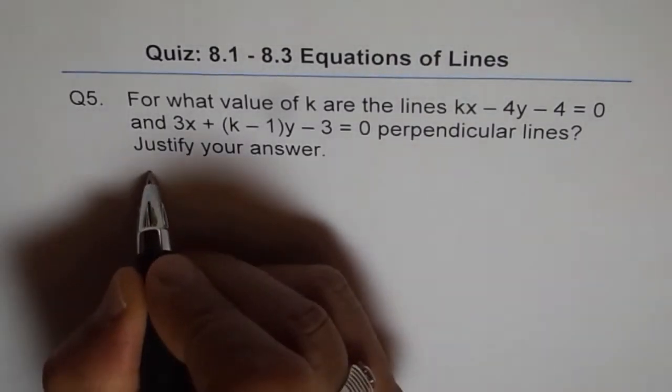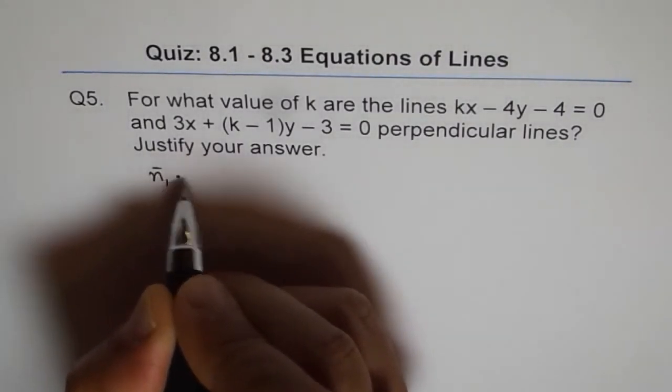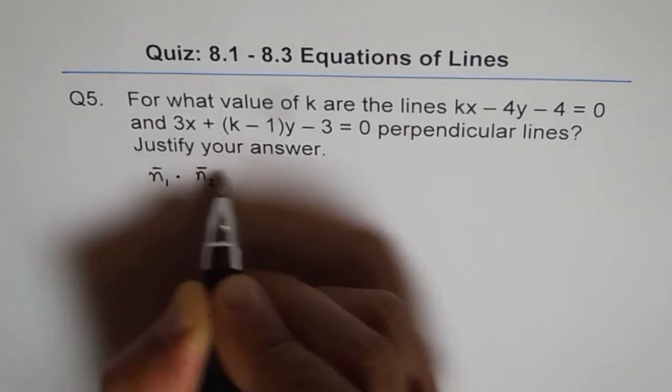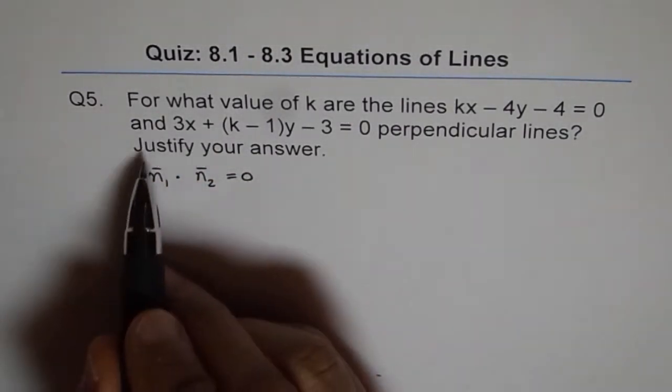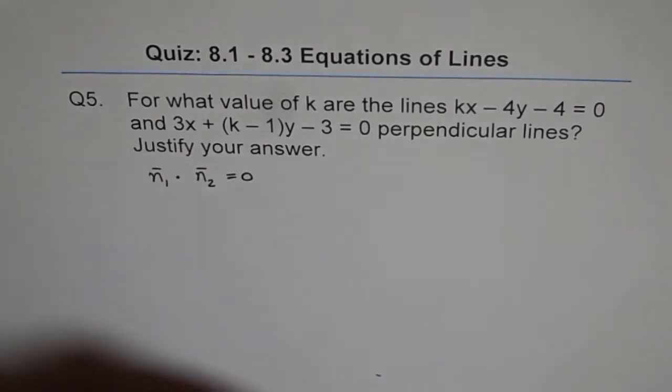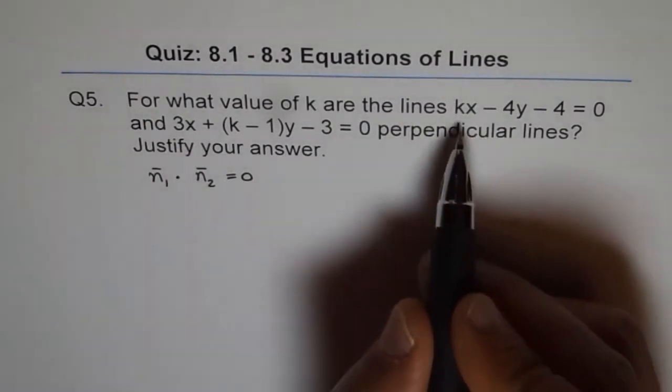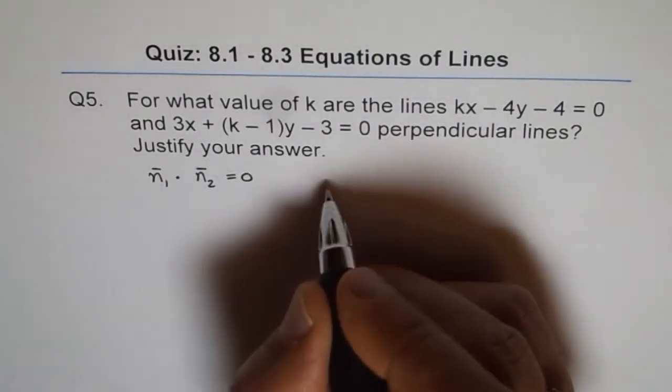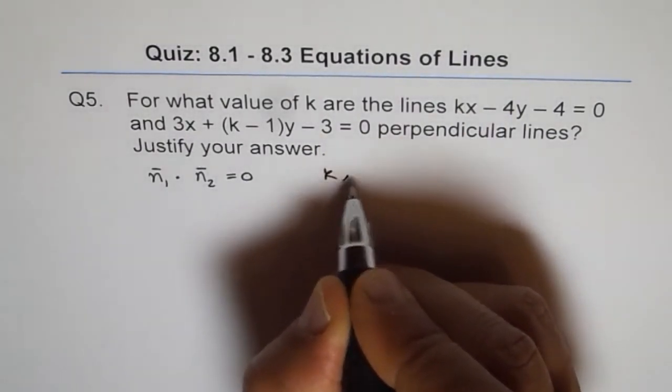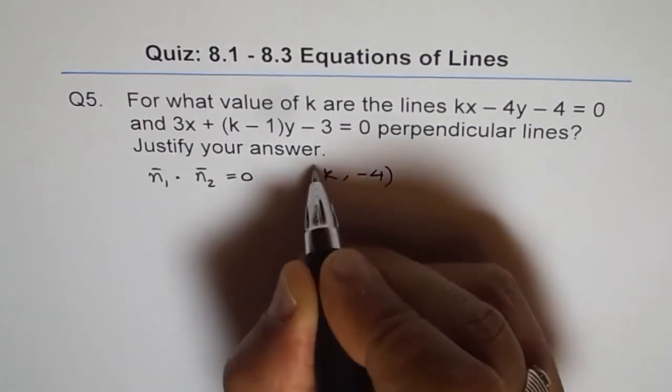We say n1 dot n2 equals 0. That is our reason. Now let's solve it. n1 is k minus 4. So k minus 4, this is n1.